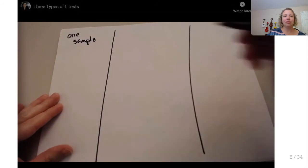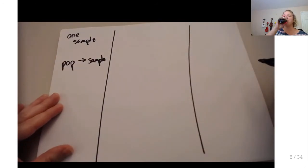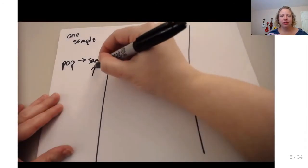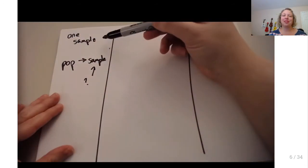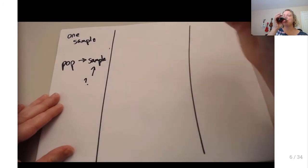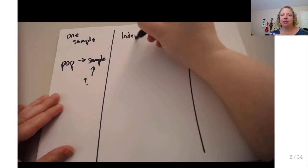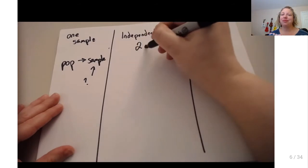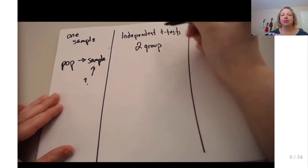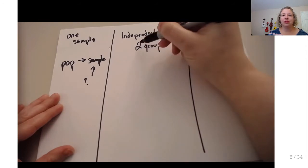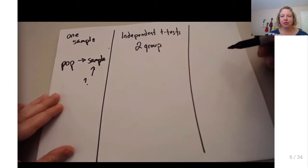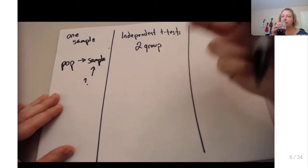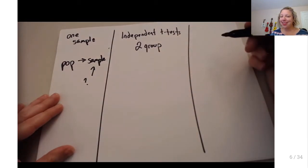There are one-sample t-tests that compare a population to a sample — the question is whether the sample is different from the population. It's called a one-sample t-test because there is only one sample. T-tests always study two things: either a population and a sample, two groups, or two measurement points. If there are more than two, it's a different kind of statistical test.